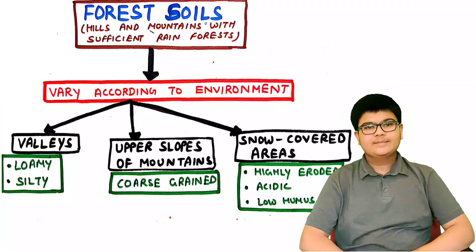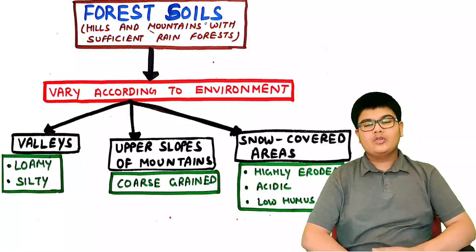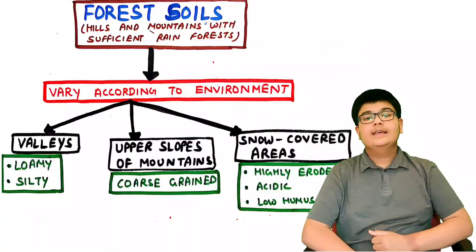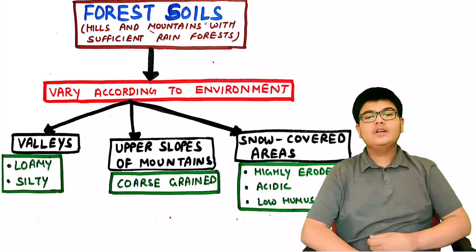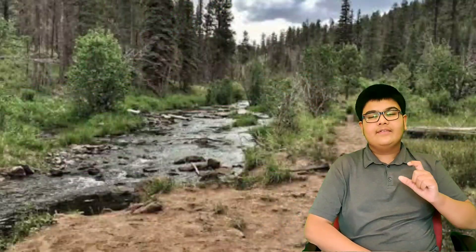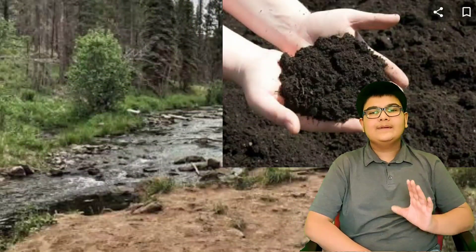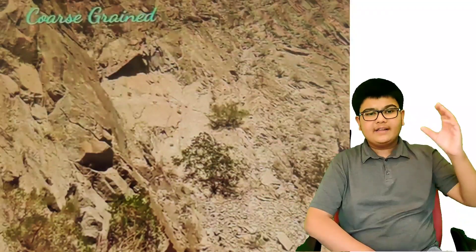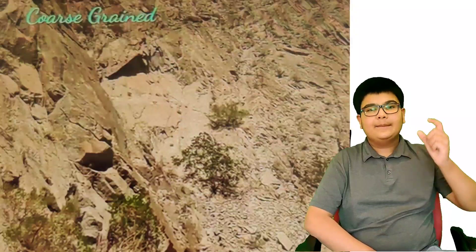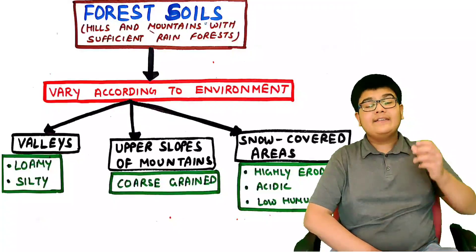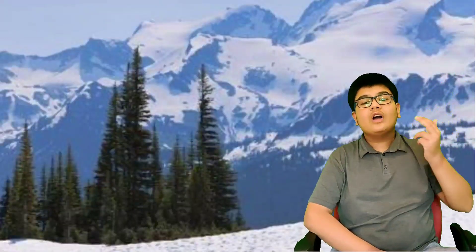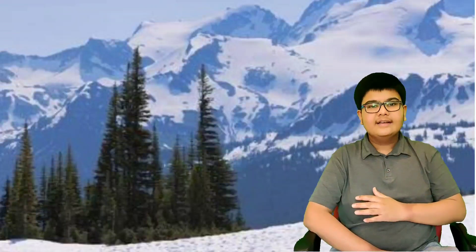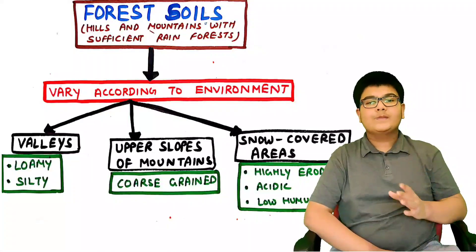Forest soils are present in hills and mountain regions with sufficient rainfall. Their nature varies according to the environment. In river valleys, the soil is very loamy and silty and suitable for agriculture. On the upper slopes of the mountains, it becomes coarse-grained as more rocks are present. In snow-covered higher regions, the soil is highly eroded, very acidic, and has low humus content.